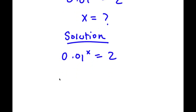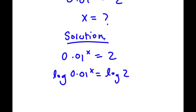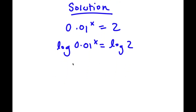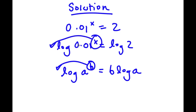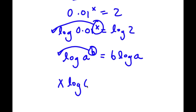I'm going to take the log on both sides. So now I have log 0.01 to the power of x is equal to log 2. Now, if I have something in the form log a to the power of b, I can simply move this exponent b to the front — so this equals b times log a. In this case, I can move x to the front: x times log 0.01 is equal to log 2.